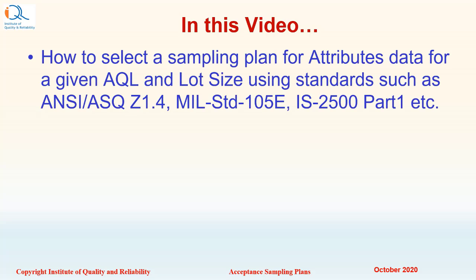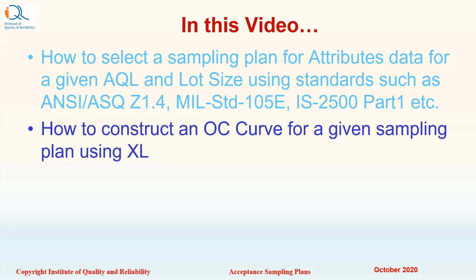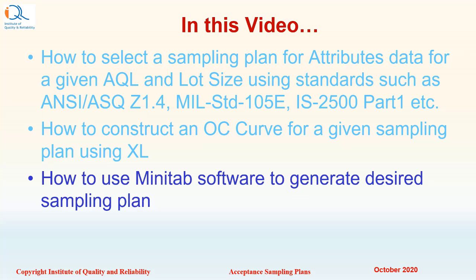In this video, we will see how to select a Sampling Plan for Attributes data for a given AQL and lot size using standards such as NCASQ Z1.4, MIL-ST105E, and IS2500 Part 1. We will also see how to construct an operating characteristic curve for a given sampling plan using Excel, and finally, we will illustrate how to use Minitab software to generate a desired sampling plan for attributes.